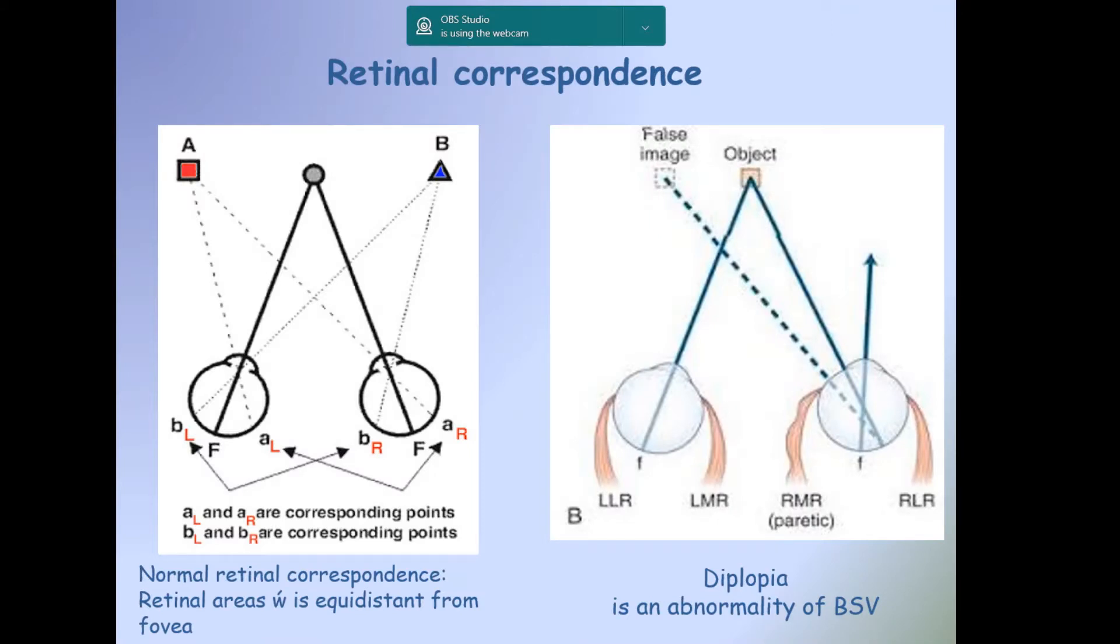Retinal correspondence: The left diagram shows normal retinal correspondence where the fovea in the right eye and fovea in the left eye project to the same position in space. Also, retinal area AR in the right eye and retinal area AL in the left eye project to the same position in space. Normal retinal correspondence is retinal areas which are equidistant from the fovea. The right diagram shows paralytic squint with diplopia, an abnormality of binocular single vision, where the fovea in the left eye is matched with a non-correspondent retinal point in the right eye, so it will be perceived as two images.